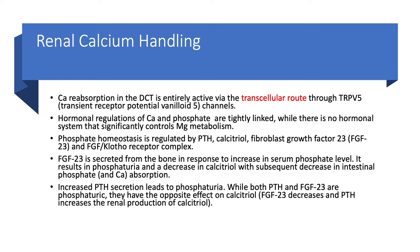In the distal convoluted tubule, in the final segment of the nephron, although less than 10 percent of absorption occurs here, you have fine-tuning of the whole process. To do fine-tuning, you need the transcellular route — active reabsorption. Calcium reabsorption in the distal convoluted tubule is entirely active, as opposed to the proximal tubule and thick ascending limb. It occurs via the TRPV5 channels. We heard that name in the GI tract: calcium reabsorption in the GI tract happens via TRPV5 and TRPV6 channels, while for magnesium it is TRPM6 and TRPM7.